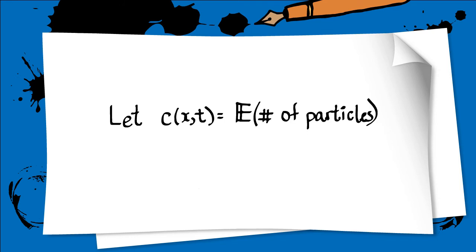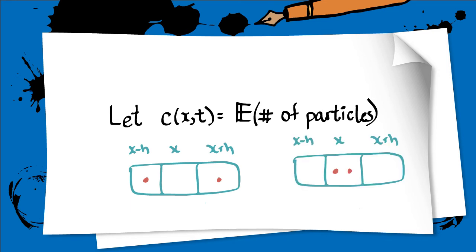We would like to derive an equation that describes the change in time of c of x and t, the expected number of particles. To do that, we posit that the expected number of particles at time t plus tau will depend on the expected number of particles at time t in the two adjacent squares x minus h and x plus h. This is what is described in the equation on the screen since we expect half of the particles at position x at time t plus tau to have come from x plus h and half to have come from x minus h.